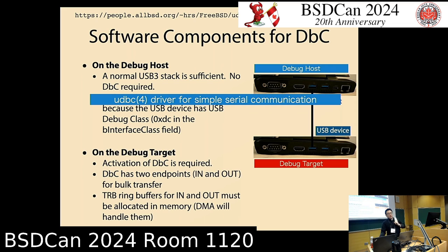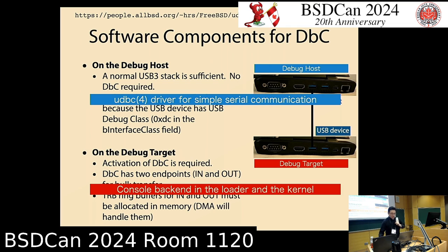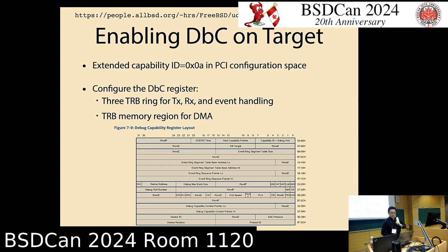On the debug target, you need to activate the debug capability. The two endpoints are automatically configured, and you have to configure the TRB ring buffers for in and out endpoints. The hardware will get data from the memory region allocated for the TRB using DMA. So a DMA mapping is required.